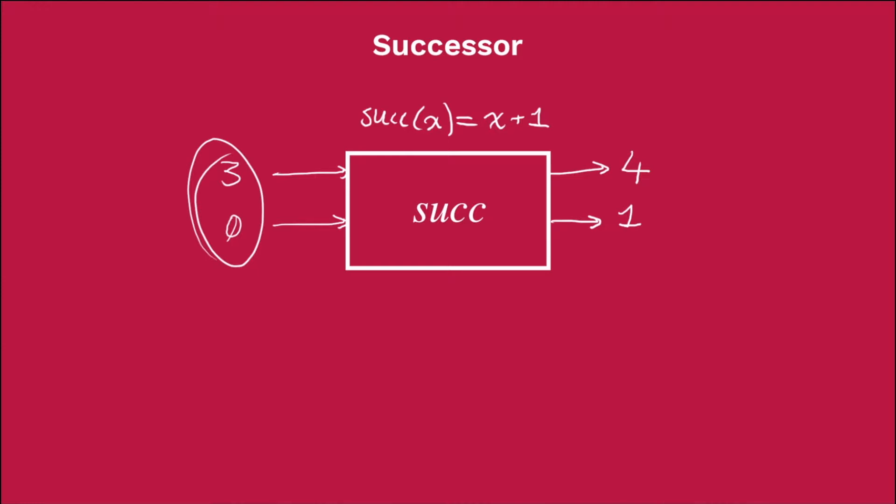Now the domain that successor is operating on is actually the natural numbers. The natural numbers are the set of integers 0 or greater, and I'll write that out here. And the codomain over here is the same, it's also natural numbers.